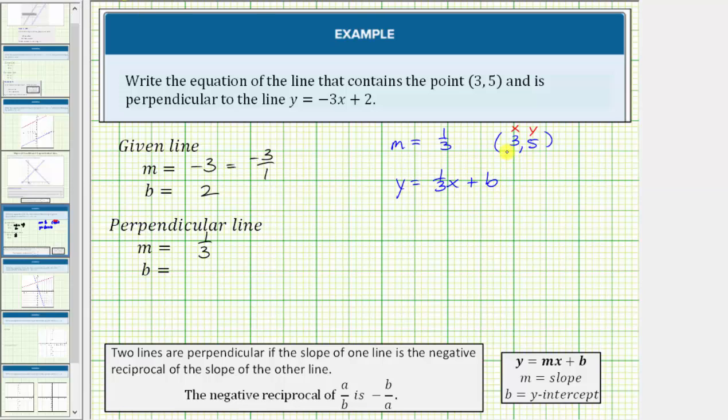Performing substitution, we have 5 = (1/3)(3) + b. Since (1/3)(3) equals 1, we have 5 = 1 + b.